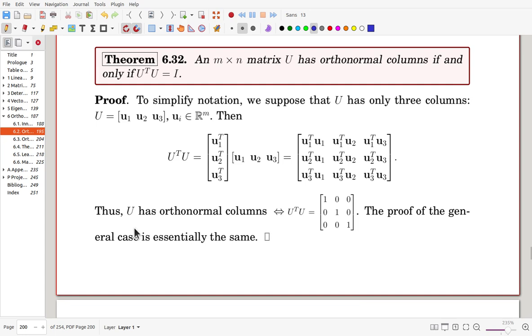So if U has orthonormal columns, then only along the diagonal the value will be 1, and off-diagonal entries must be 0. That means when U has only three columns, the theorem is true, but the proof can be generalized for arbitrary number of columns. So there is no limitation for generalization. So we can conclude the theorem.